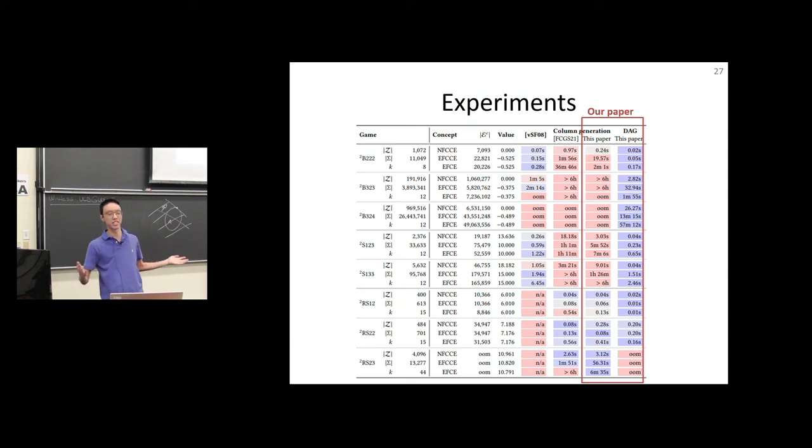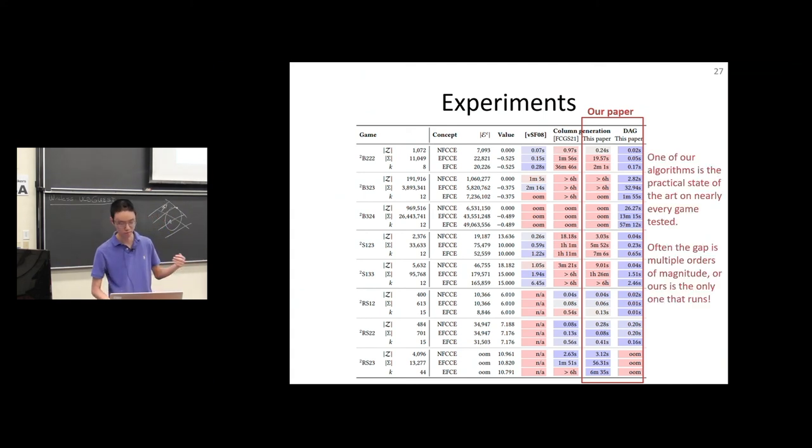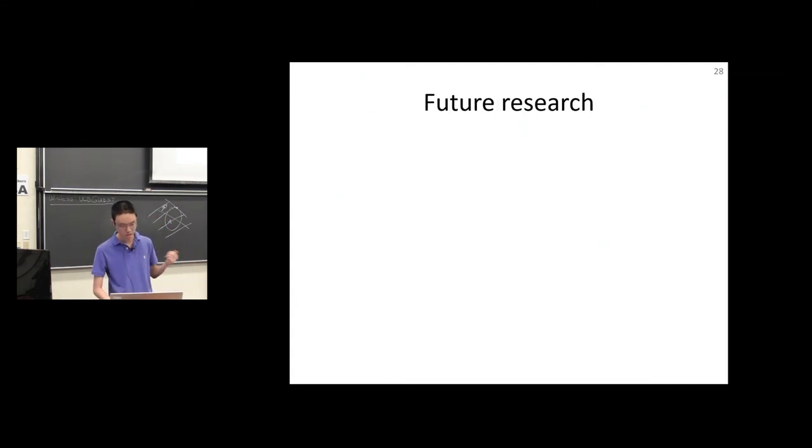Very briefly, some experiments. Basically, in every single game we tested, one of our two algorithms, depending on k, as you might expect, was the state of the art, often by multiple orders of magnitude.